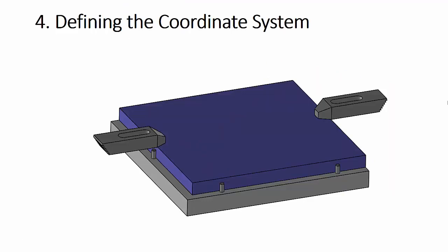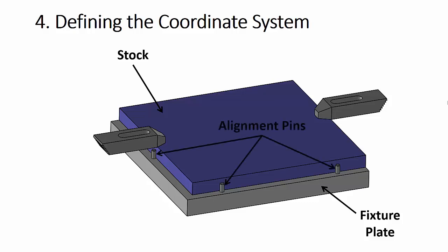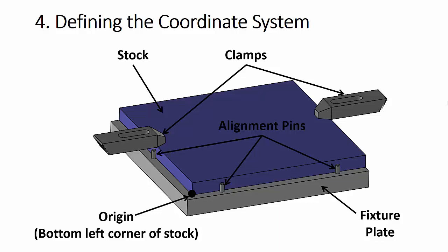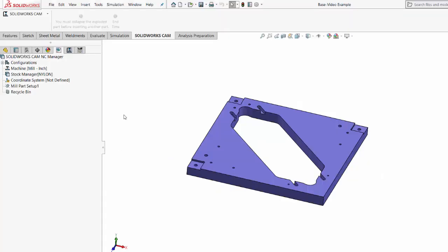Now we're ready for step four: defining the machining coordinate system. This graphic shows how we're going to hold the part on the Haas mill while machining. We have a fixture plate mounted to the Haas machine, and we'll place the stock on the fixture plate and push it up against the alignment pins. Once pushed against the alignment pins, we'll tighten down the clamps. Because those alignment pins are along the left side and bottom edge, this is what we've defined as the origin. The x-direction is to the right, the positive y-direction is away from you, and the positive z-direction is upward.